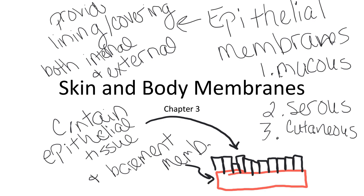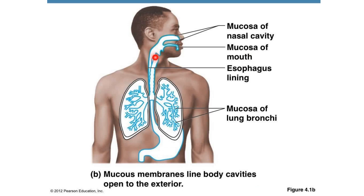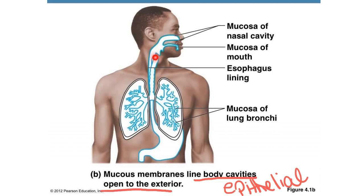We're going to go through the three types: mucous, serous, and cutaneous. Our first one is the mucous membrane — a type of epithelial membrane. The mucous membrane is going to line body cavities that open to the exterior, so that open to the outside. That's a distinguishing characteristic. Examples include the respiratory tract — lining the nose, mouth, and lungs — the digestive tract, urinary tract, and reproductive tracts.